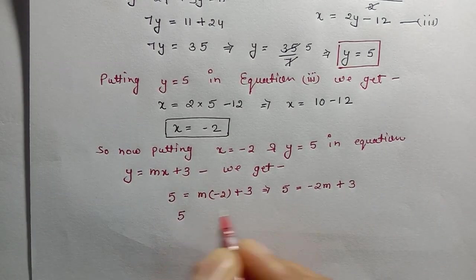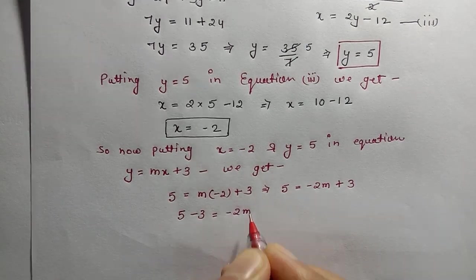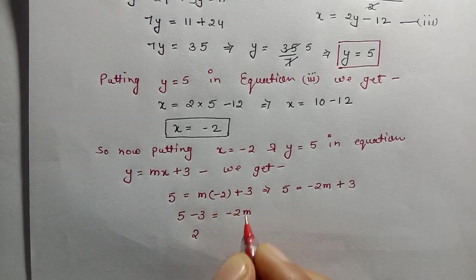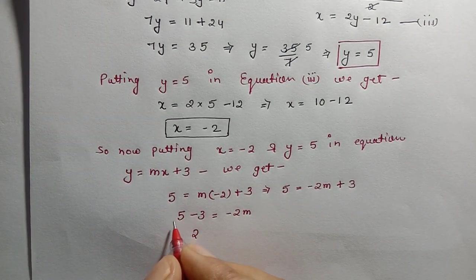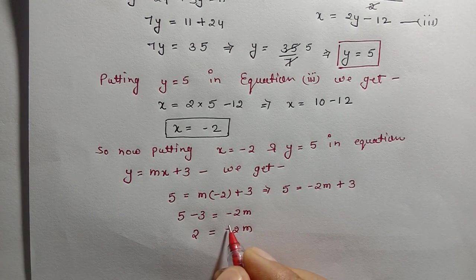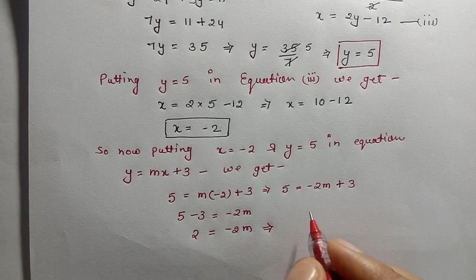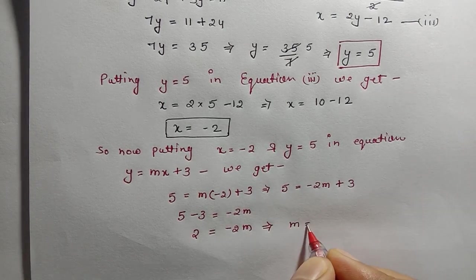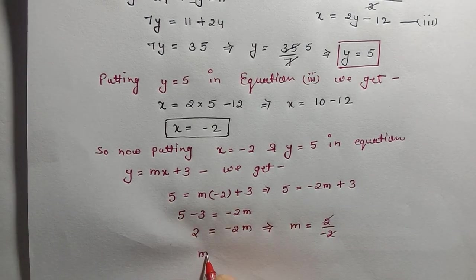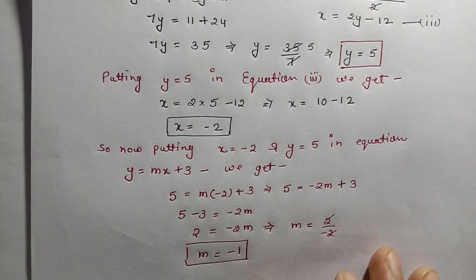Transforming: 5 - 3 = -2m, so 2 = -2m. To find m, we divide both sides by -2: m = 2 ÷ (-2) = -1. Therefore m = -1.